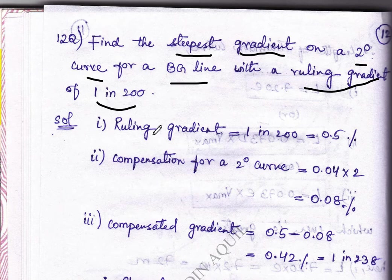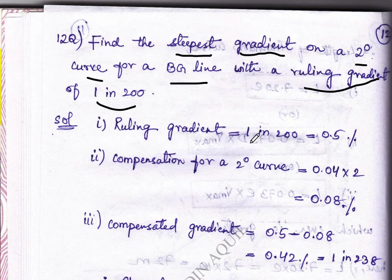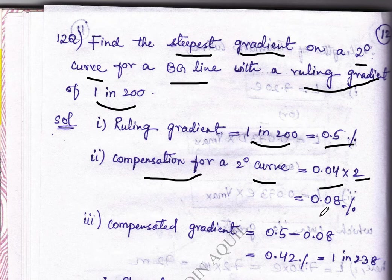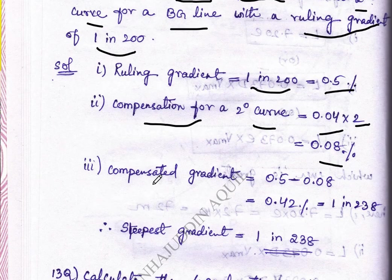Starting with the solution: rolling gradient is given as 1 in 200 which is 0.5%. Next, compensation for a 2 degree curve is 0.04 into 2 which is 0.08%.